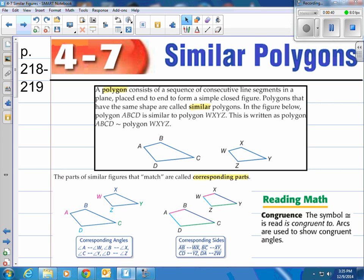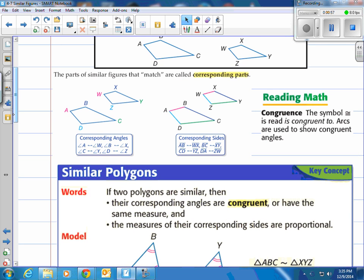In the figure below, polygon ABCD is similar to polygon WXYZ. This is written as polygon ABCD and then they have that little squiggly which means similar to polygon WXYZ. Parts of similar figures that match are called corresponding parts. Corresponding parts are their angles and your sides. You can see that they have angle A here and angle W colored in pink there and those are corresponding angles.